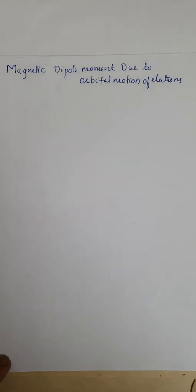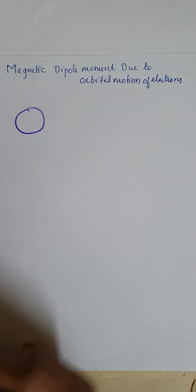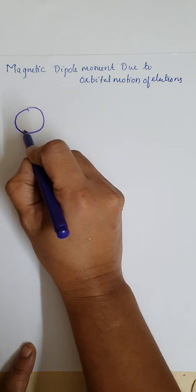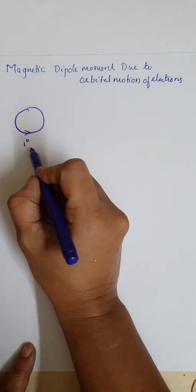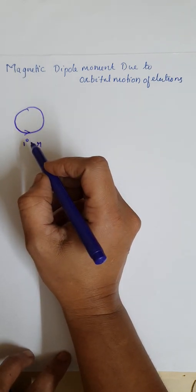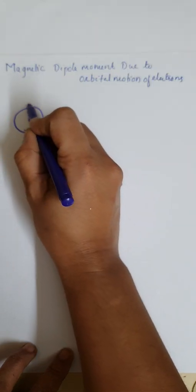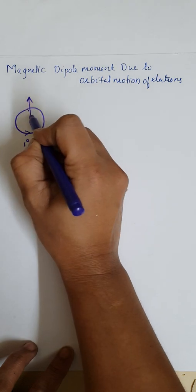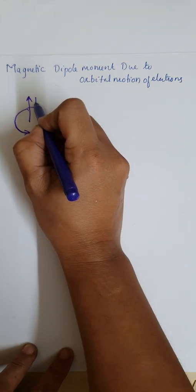Magnetic dipole moment due to orbital motion of electrons. Consider a circular loop carrying a current. Let I be the current passing through this loop and R be the radius of this loop. When a current passes through this loop, it produces a magnetic field, and a magnetic dipole moment will be induced in it. This magnetic dipole moment will be projected outward in this direction, and we can consider this magnetic dipole moment as mu.